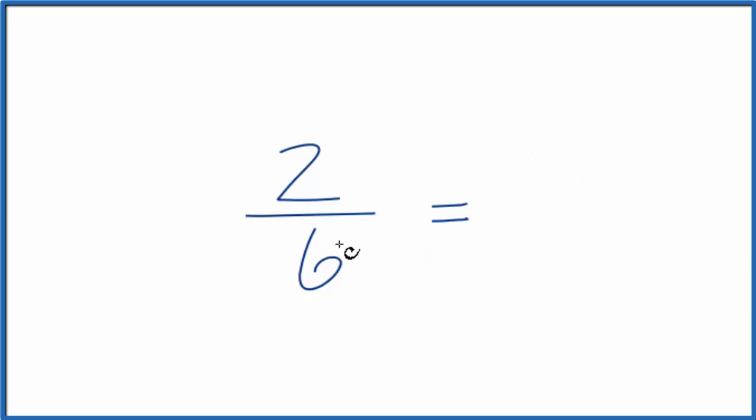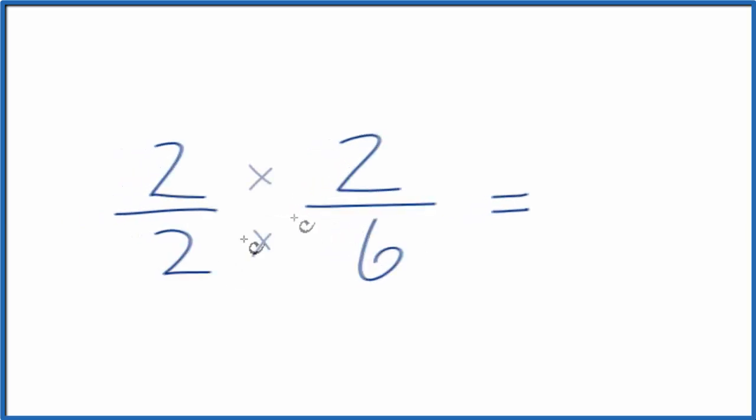So if we multiply 2/6 by 1, it'd still be 2/6. But instead of 1, let's do 2 over 2. 2 divided by 2 is still 1. So we're not changing the value, just the numerator and denominator.